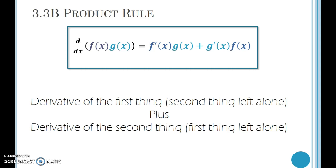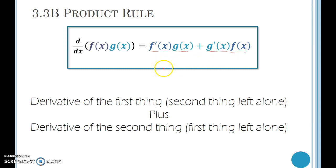Here's the product rule. If you have a product of two things — and here's the Leibniz notation — you get the derivative of the first thing times the second thing left alone, plus the derivative of the second thing times the first thing left alone. Because it involves addition and multiplication, you can change the order of the terms or even the order of the sum.